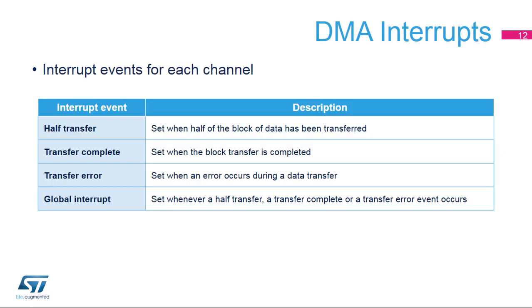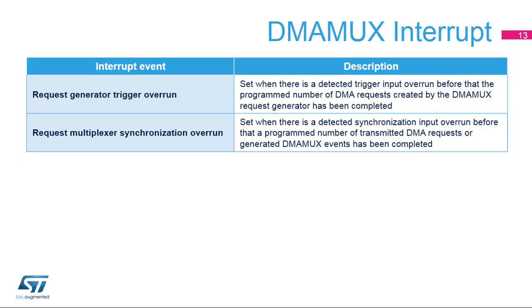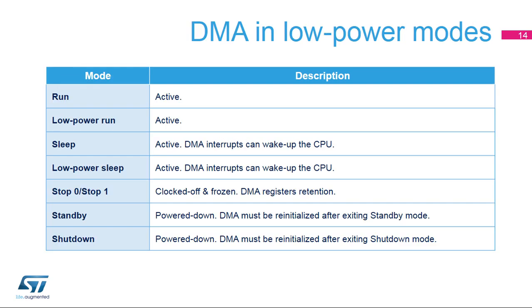Each DMA channel can notify software with an interrupt being caused by any of the four possible events: half block transfer completion, block transfer completion, transfer error, or any of the three above events, also known as global. DMA MUX can generate one interrupt caused from an overrun by any of the configured channels. The root cause may be either a trigger overrun before the internally generated number of DMA requests have been issued and completed, and/or a synchronization overrun before the number of DMA requests — external or internal requests — have been issued and completed. This table summarizes the state of DMA versus the power state machine.